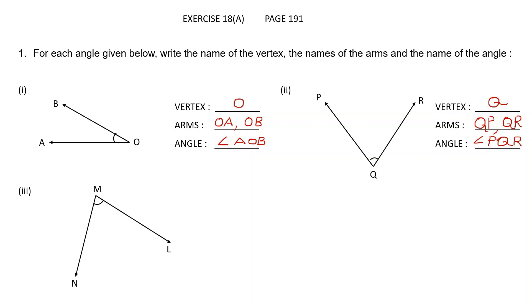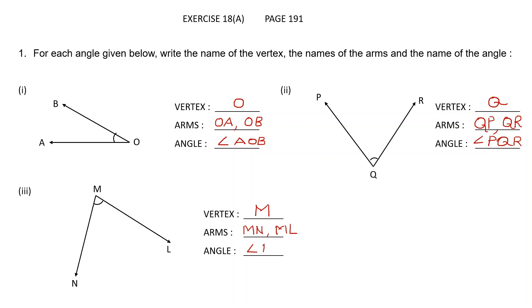The third one. The vertex is the point where the two rays meet, so the vertex is M. The arms are the two rays: MN and ML. The angle will be LMN — angle LMN. Keep the letter M in the middle. Always the letter of the vertex should be in the middle.